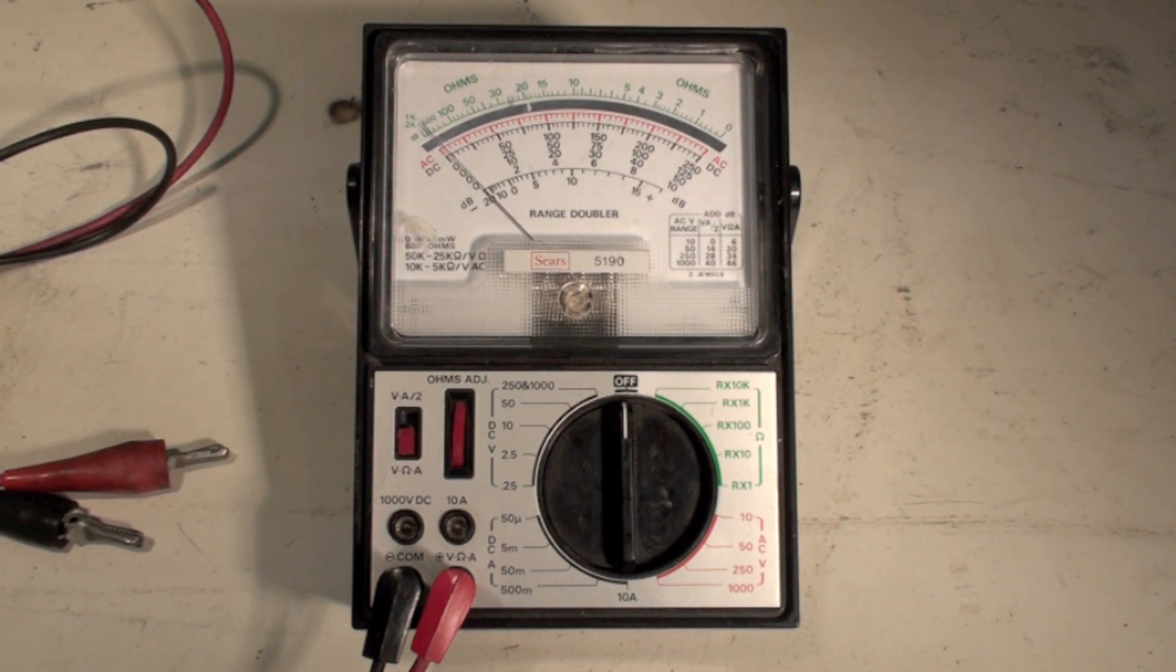So it does most of the things we'd ask a volt-ohm meter to do. This one also has DC amps from 50 microamps up to 10 amps. That is sometimes useful, not necessarily anymore. We use microamps in our industry sometimes, but the rest of it we don't use much.